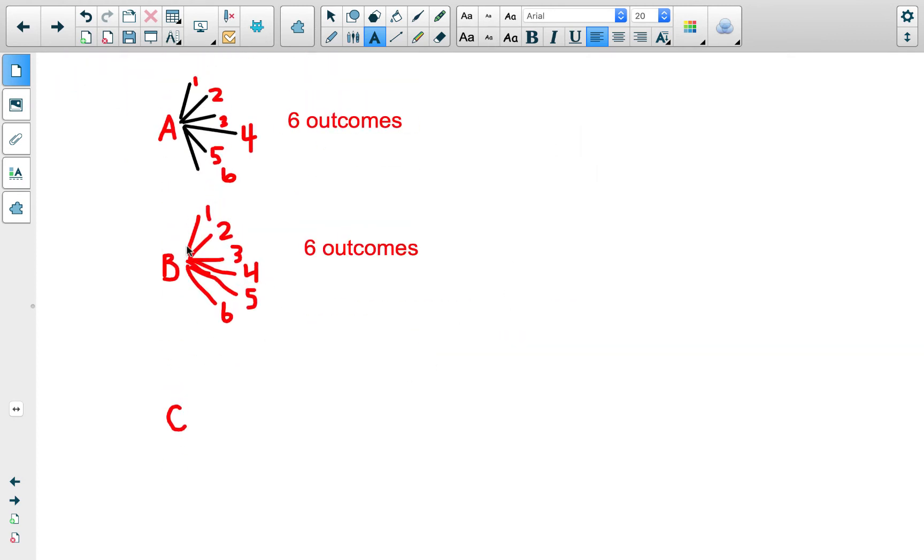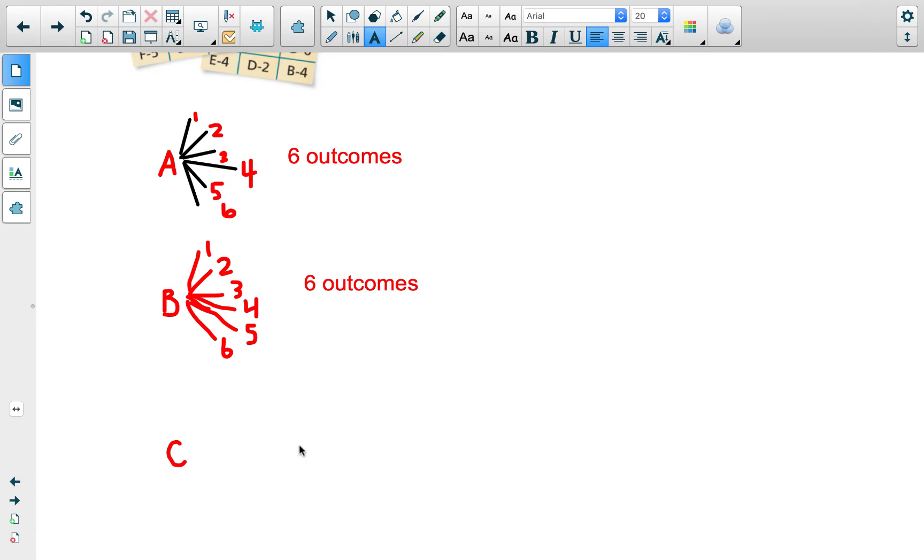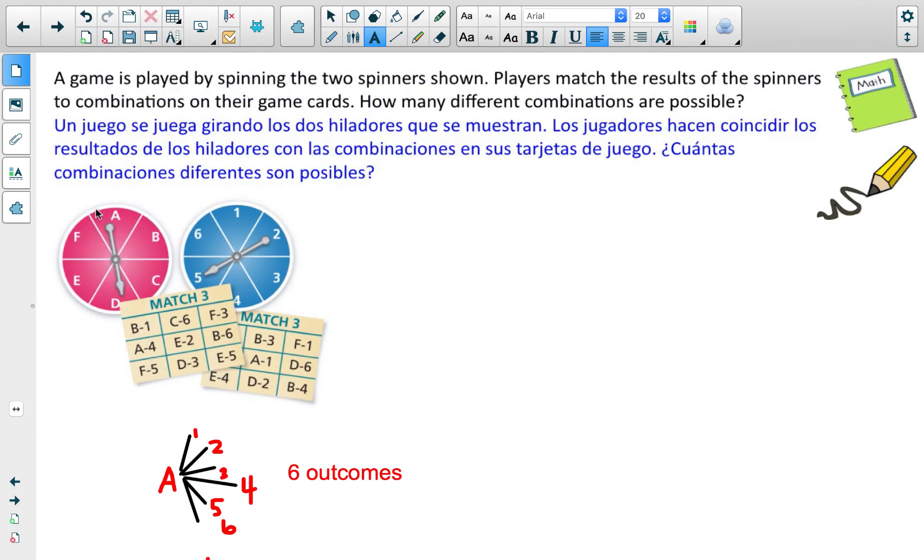If you continue this pattern, I want you to think about how many possible outcomes you think C would have. Hopefully you know it's six. And then D would have six. E and F. So you'd end up with 6, 12, 18, 24, 30, 36. There's 36 total possible outcomes.